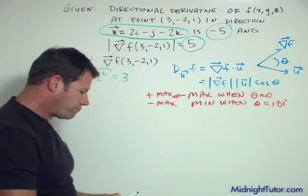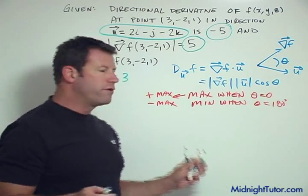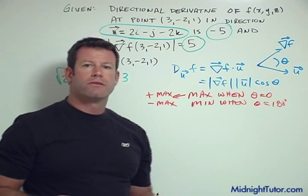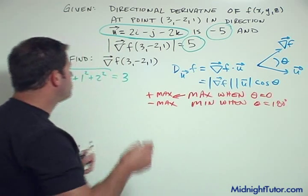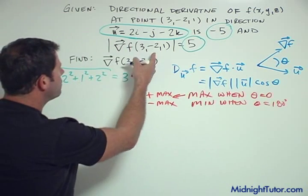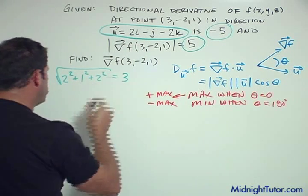So now all we have to do to figure out the gradient, we don't have to do any calculation of partial derivatives or solve multiple simultaneous equations or anything. What we have to do is take our direction vector here. It's not a unit vector, but we have 2i and j and 2k.